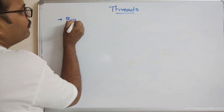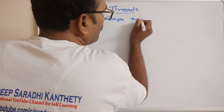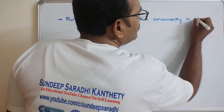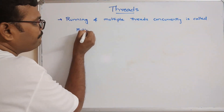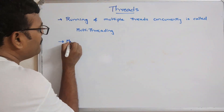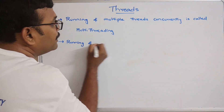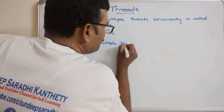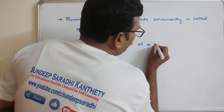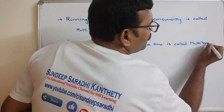Running of multiple threads concurrently is called multi-threading — running multiple threads at a time. And running of multiple tasks — a task is nothing but a process — running multiple tasks at a time is called multi-tasking.